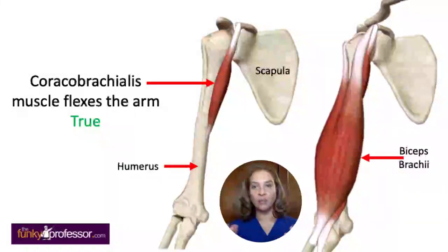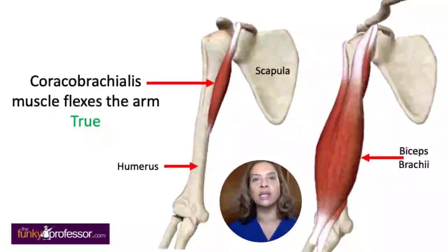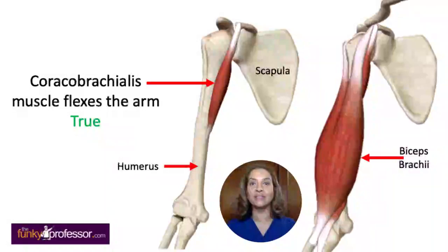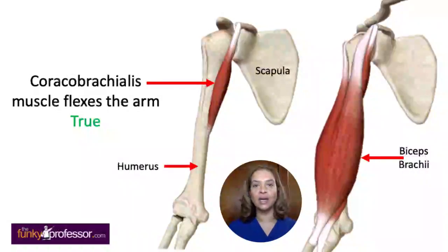Together these are known as the conjoint tendon, and they're both supplied by the same nerve, which is the musculocutaneous nerve. There is one more muscle in the anterior compartment of the arm — the brachialis muscle. That gives you the lovely mnemonic BBC: biceps, brachialis and coracobrachialis.